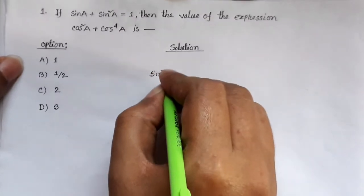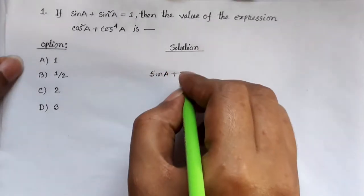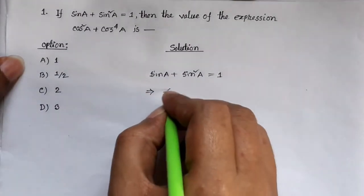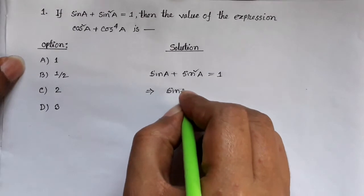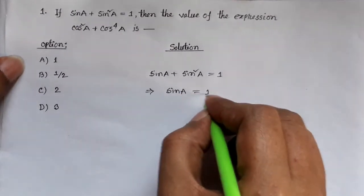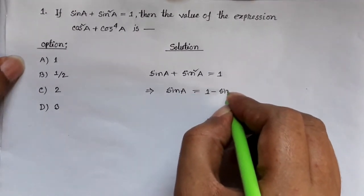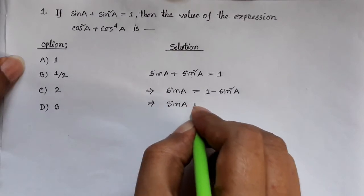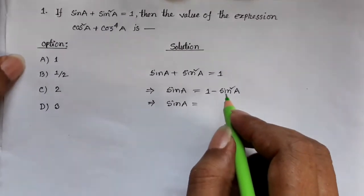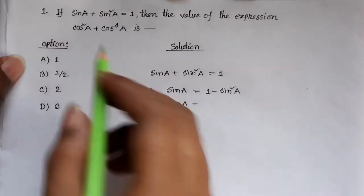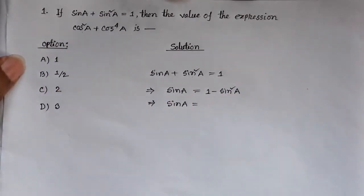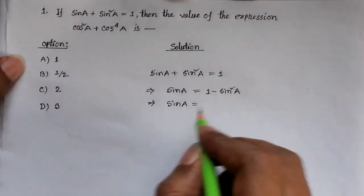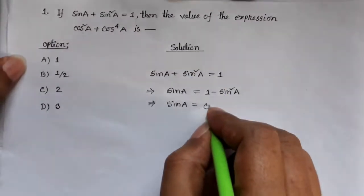Given that sin a plus sin squared a equals 1, we can rearrange: sin a equals 1 minus sin squared a. Since 1 minus sin squared a equals cos squared a, we get sin a equals cos squared a.